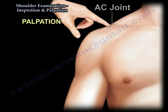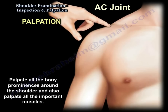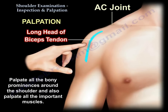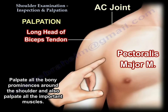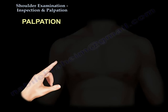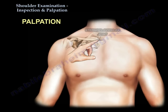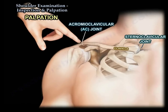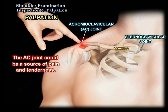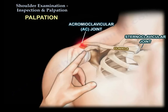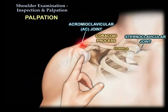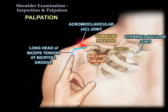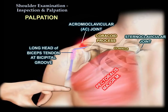Palpation — you're going to palpate all the bony prominences around the shoulder and the important muscles. Start from the sternoclavicular joint, along the clavicle, to the AC joint — which can be a source of pain and elicit tenderness — then go to the coracoid process, to the axillary crease, rolling the finger to find the biceps tendon and check for biceps tenderness. Palpate the pectoralis tendon at the axillary fold.